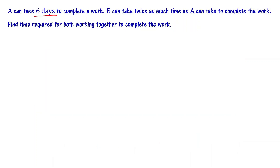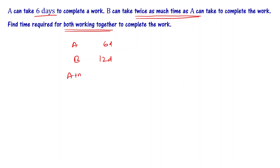Next problem: A can take 6 days to complete a work. B can take twice as much time as A, so B takes 2 times 6, which is 12 days. We need to find the time required for both working together to complete the work. The LCM of 6 and 12 is 12, so total work is 12 units.